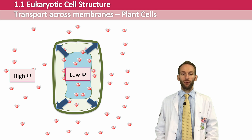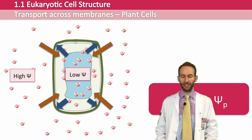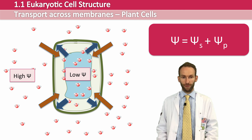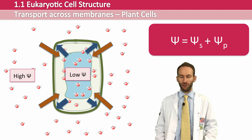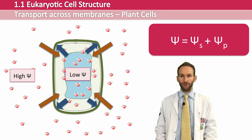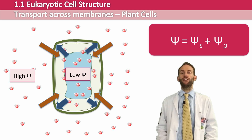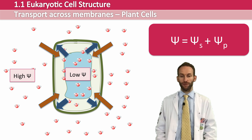If you want to look at the total water potential of a plant cell, you need to combine these two figures. So the water potential of a plant cell equals the solute potential — which is caused by the dissolved solute in the cell and is wanting to draw more water in — combined with the pressure potential, which is wanting to force water out because of the pressure of the water building up inside the cell. So water potential is a combination of these two potentials.